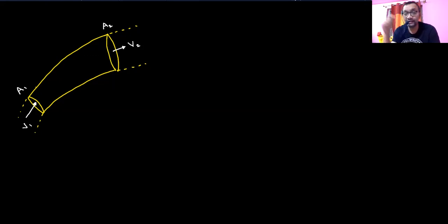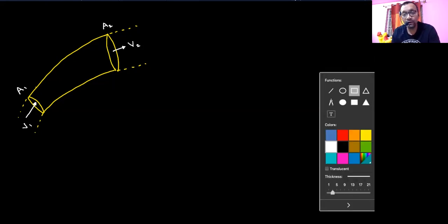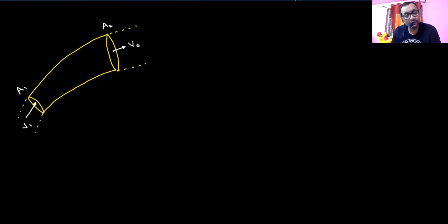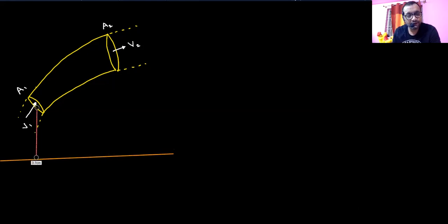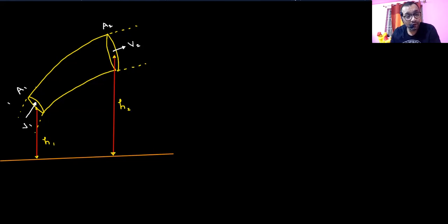When we write the mechanical energy, we first take a horizontal level and say that is our zero potential energy. We need to define that here also. So let us say this horizontal line represents zero gravitational potential energy. The heights are given as H1 and H2. The pressure inside the pipe on one side is P1 and on the other side is P2.